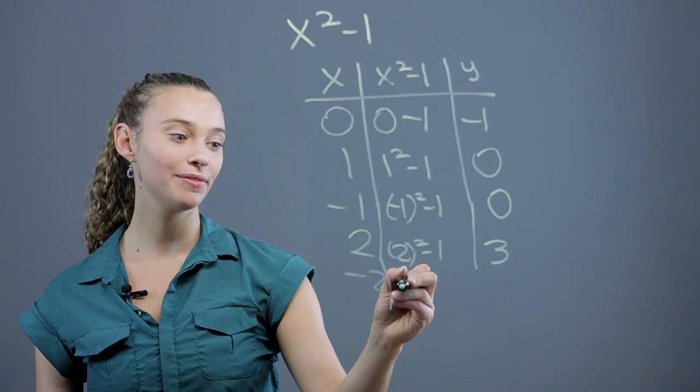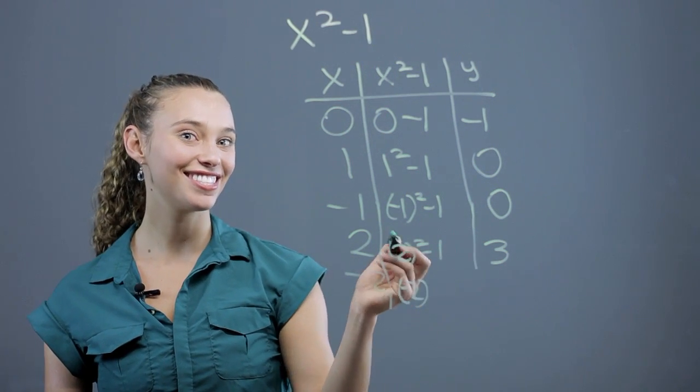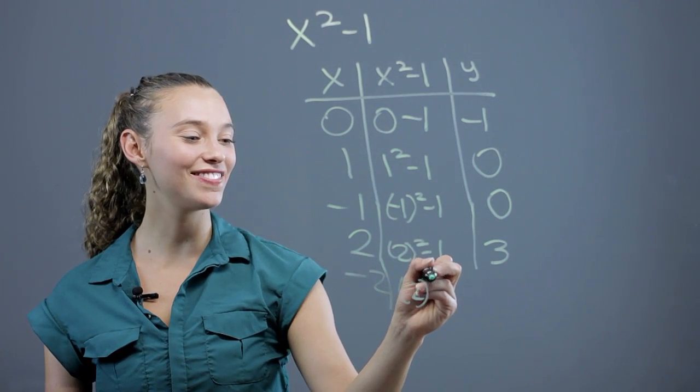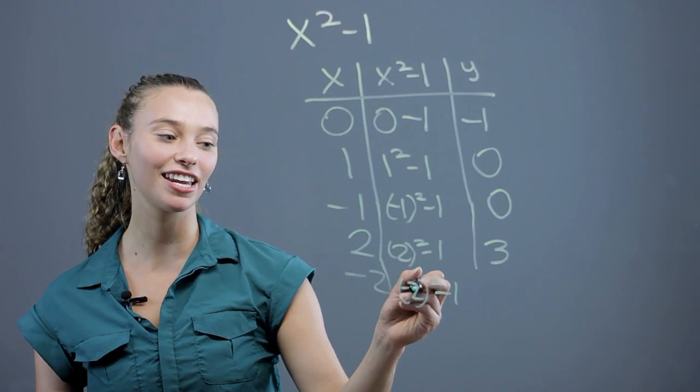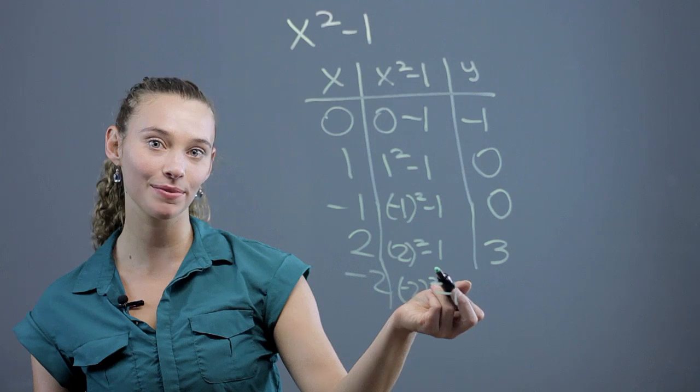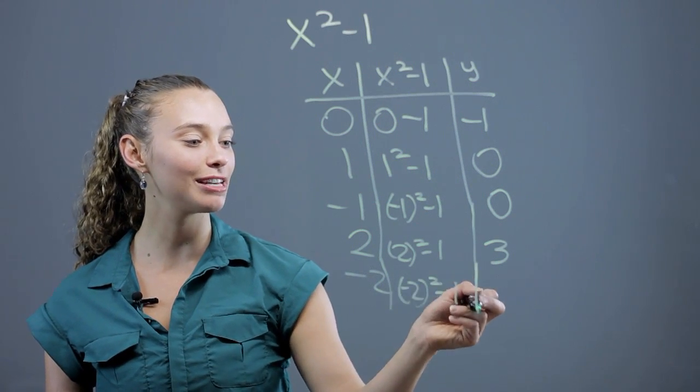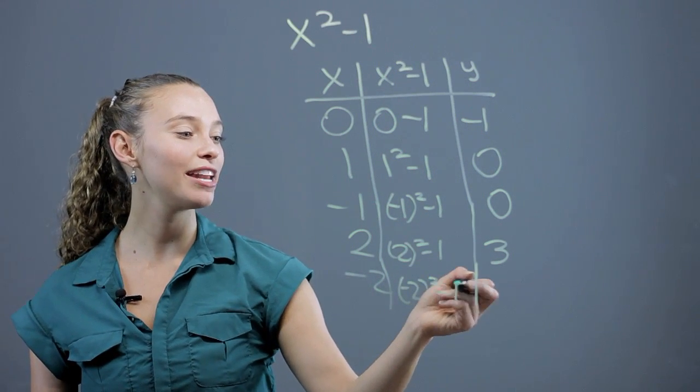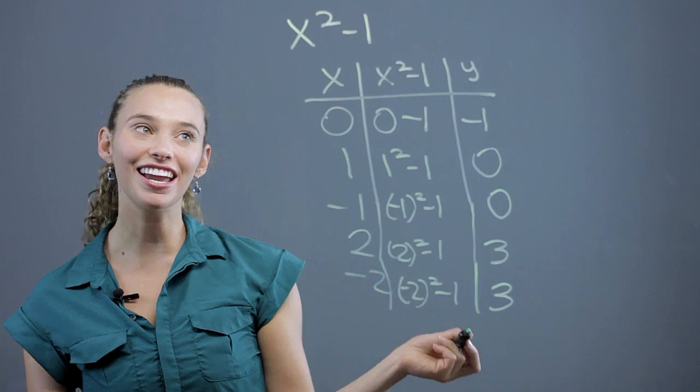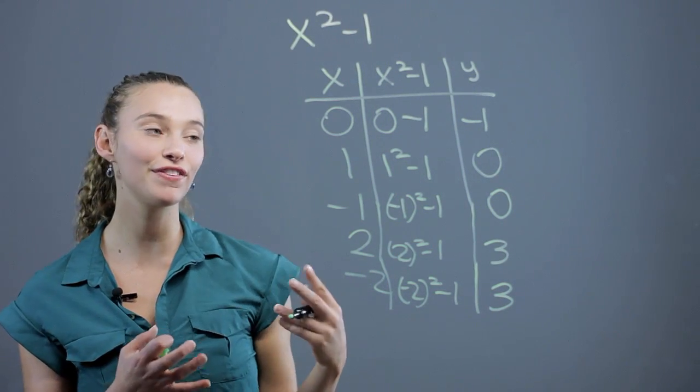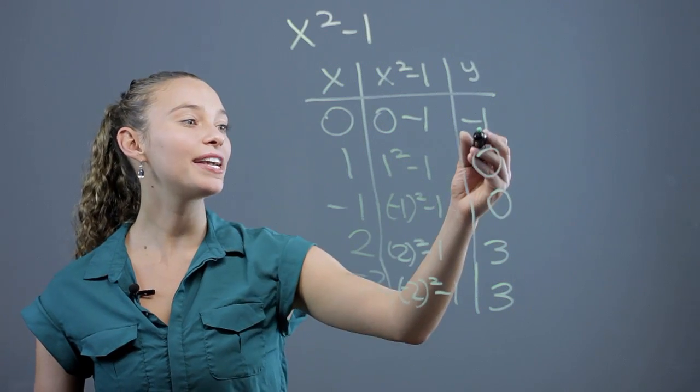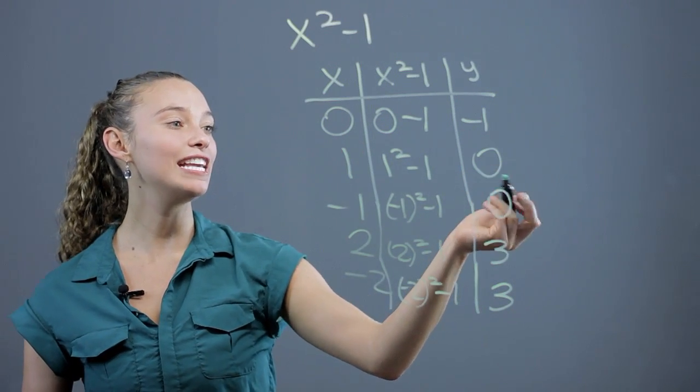Again, for negative 2, you can see we're going to have the same answer. Negative 2 squared minus 1. That's again going to be 4, because a negative times a negative is a positive when you're squaring it. A negative number is going to become positive. 4 minus 1 is again 3. So maybe if you've graphed parabolas before, you can start to visualize that this is going to be a parabola because these points are even.